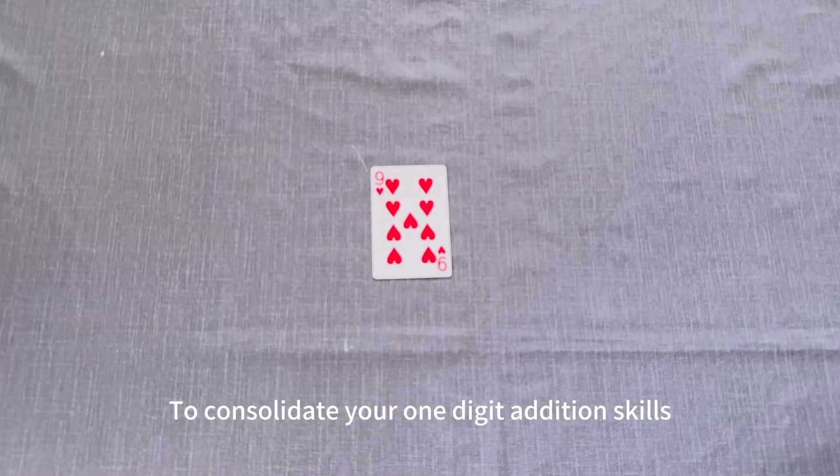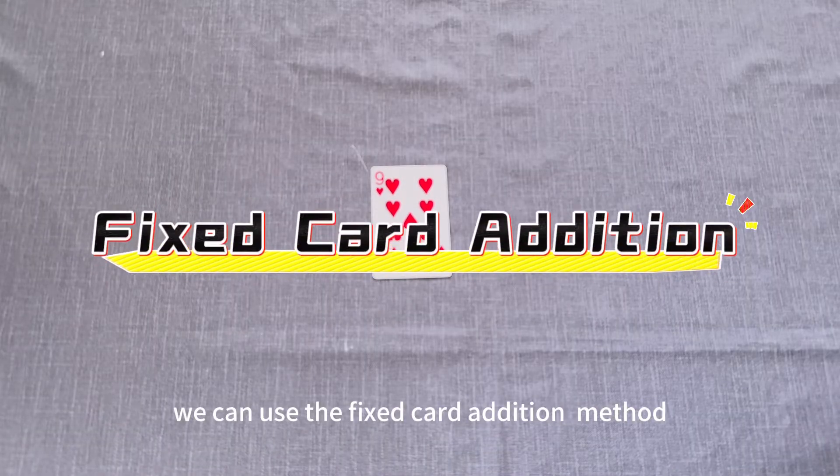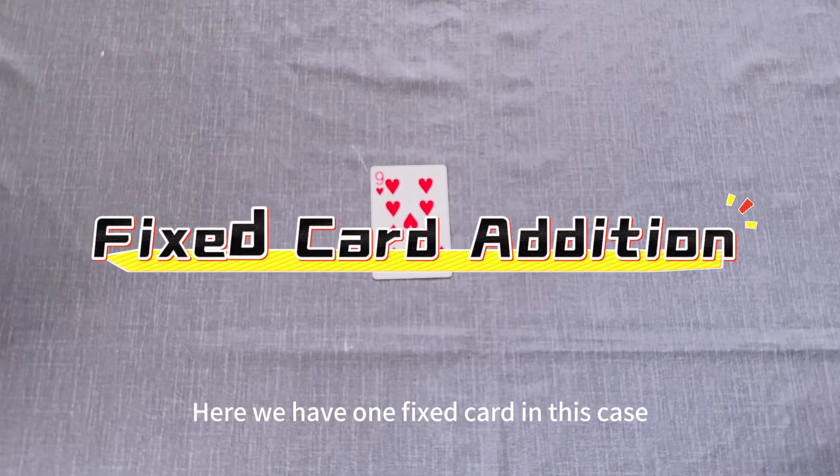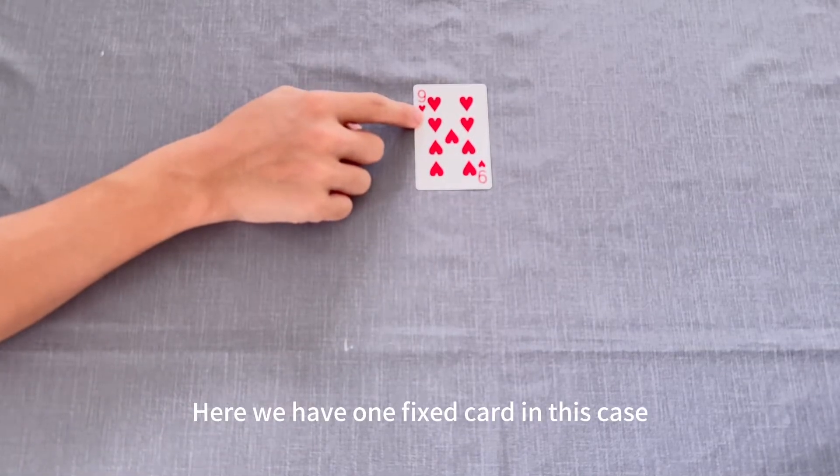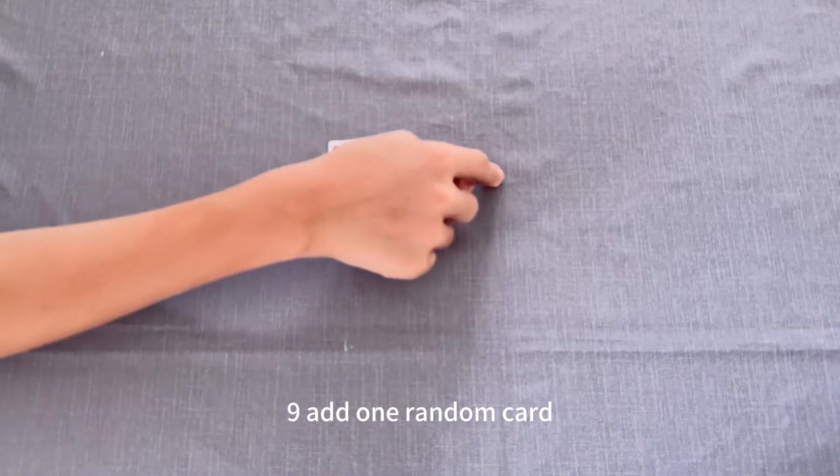To consolidate your one-digit addition skills, we can use the fixed card addition method. Here, we have one fixed card, in this case 9, and one random card.